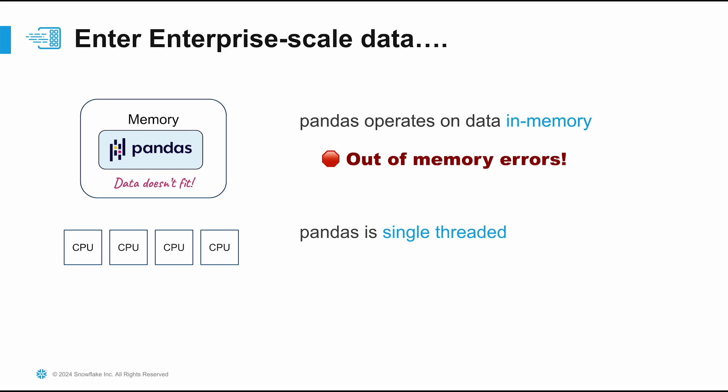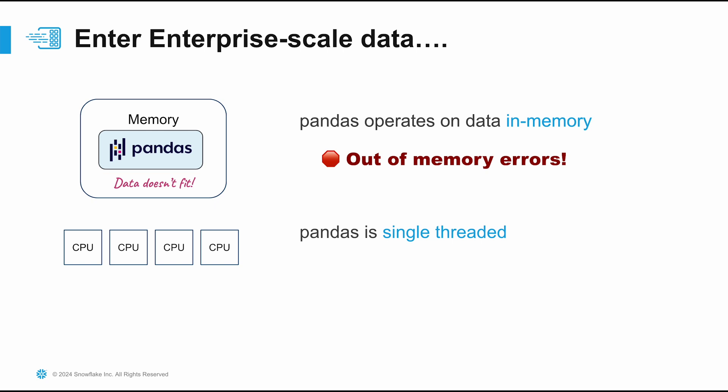Because Pandas requires everything to fit in memory, when you exceed that limit it leads to disruptive out-of-memory errors. Trying to do processing on megabytes versus terabytes of data just isn't going to be easy. And because it's single-threaded, things get really slow on large datasets. Even if you had more cores on your machine, Pandas wouldn't be able to fully utilize them, leading to wasted compute and costs.